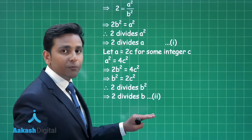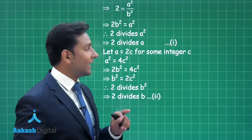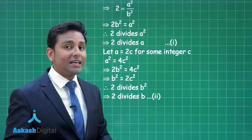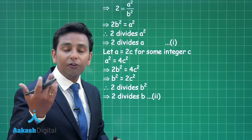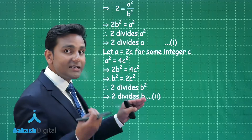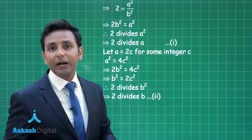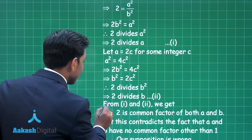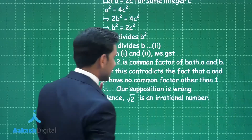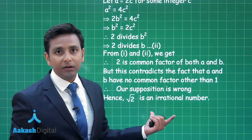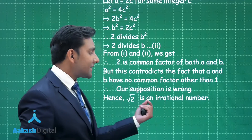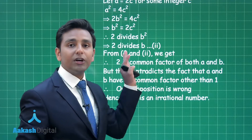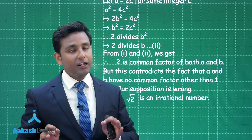From equations 1 and 2 we obtain the important conclusion that a and b are both even numbers, meaning their HCF must be a multiple of 2. If their HCF is a multiple of 2, that means they are not co-prime numbers. So we can conclude our assumption was wrong, and therefore √2 is an irrational number.